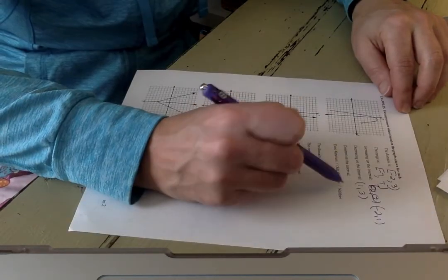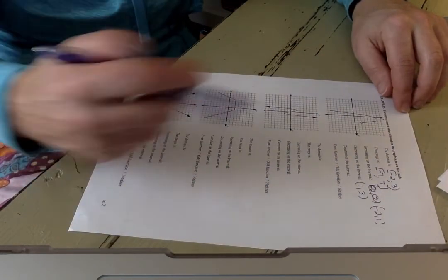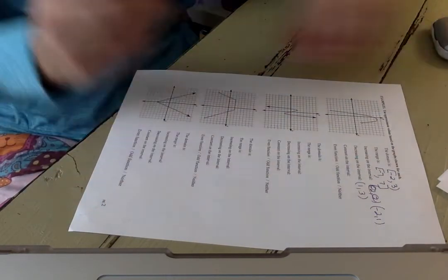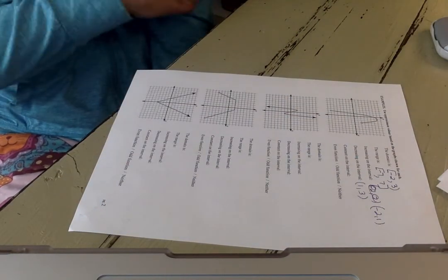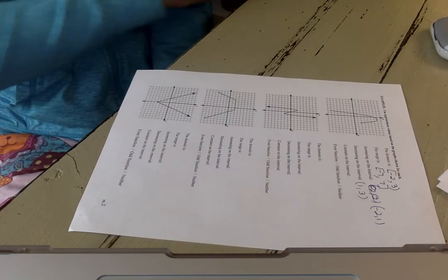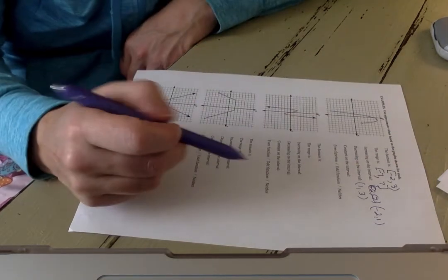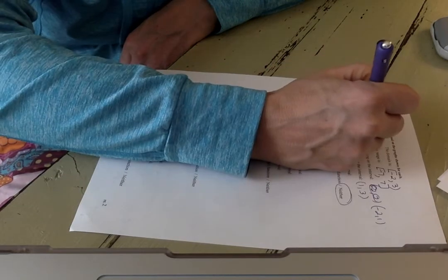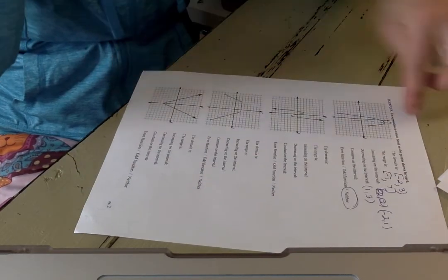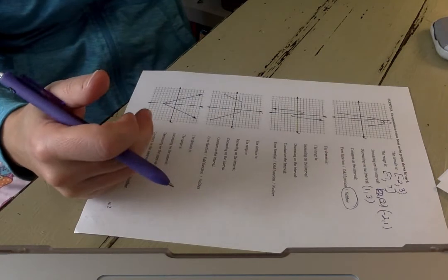Constant on the interval? Nope, there's nothing constant because there are no horizontal lines. Odd or even function or neither? For me, if I look at this, it has to be symmetric to the y-axis or it has to be symmetric to the origin. So this one is a neither for me because there is no axis of symmetry, and even if I were up at the vertex, it wouldn't happen.